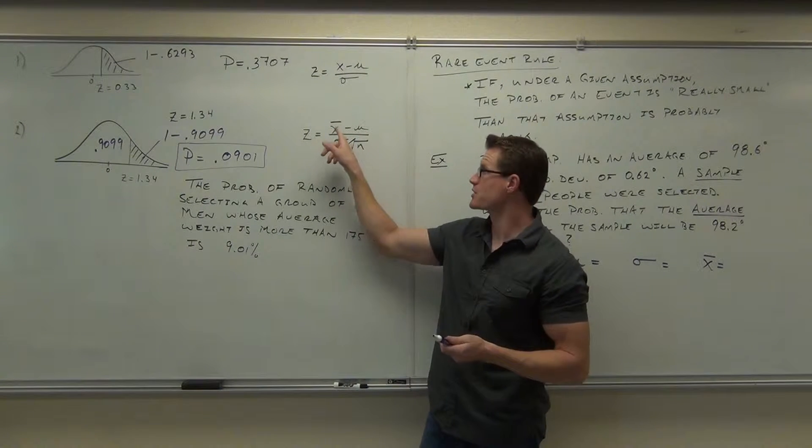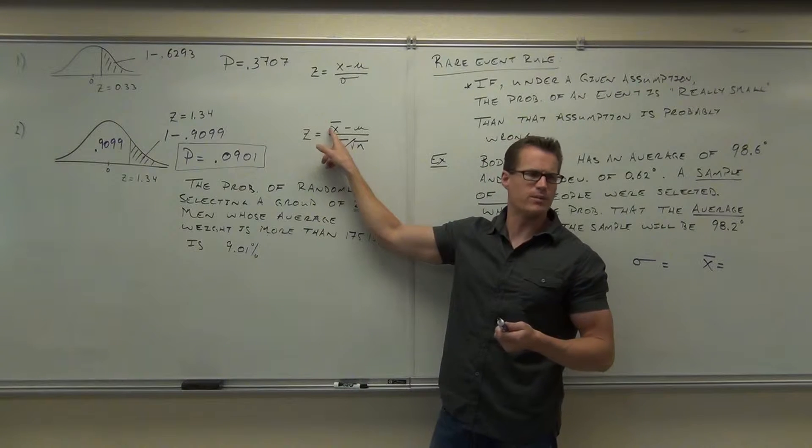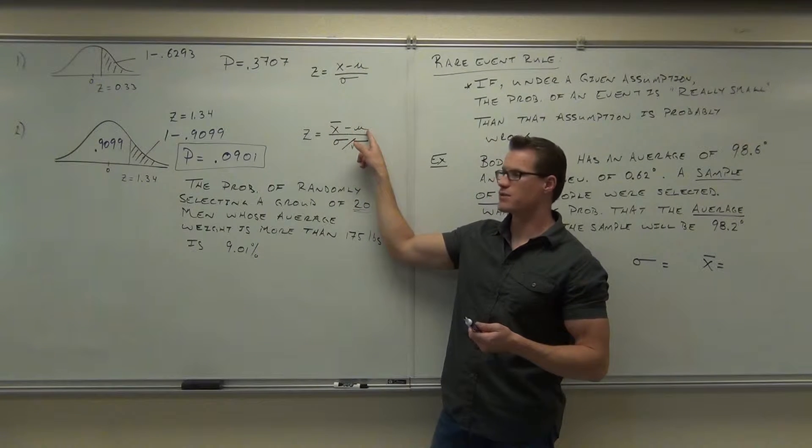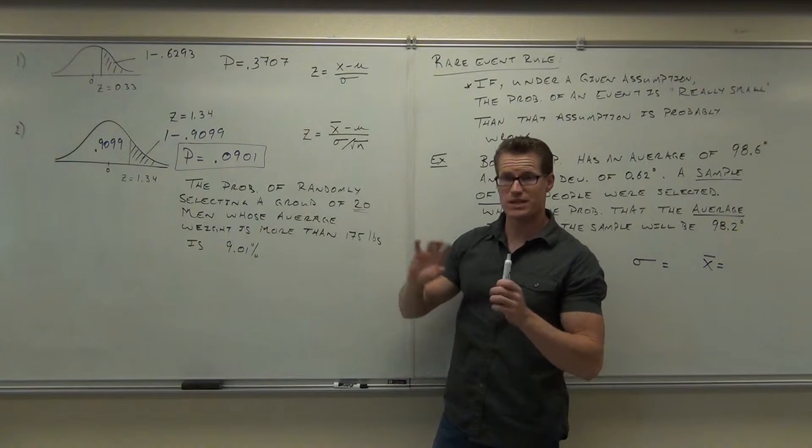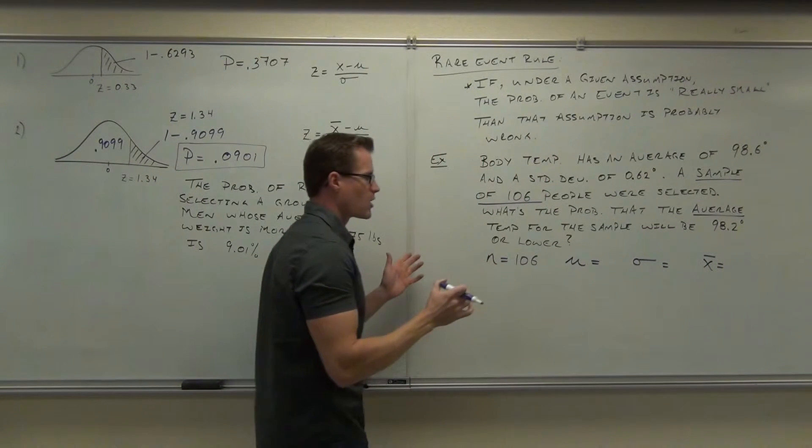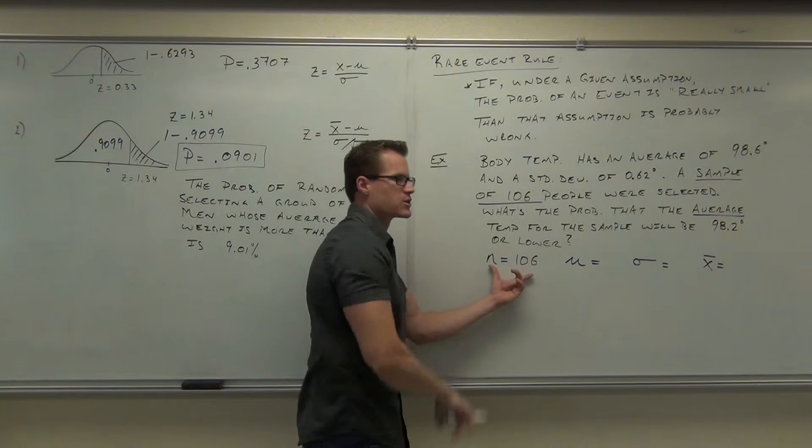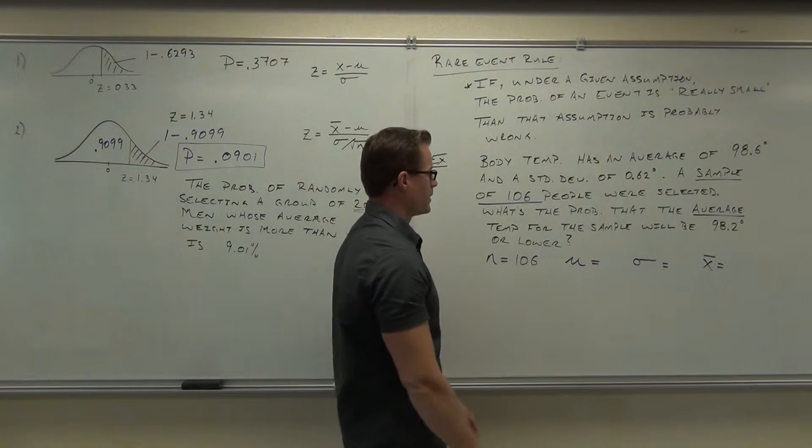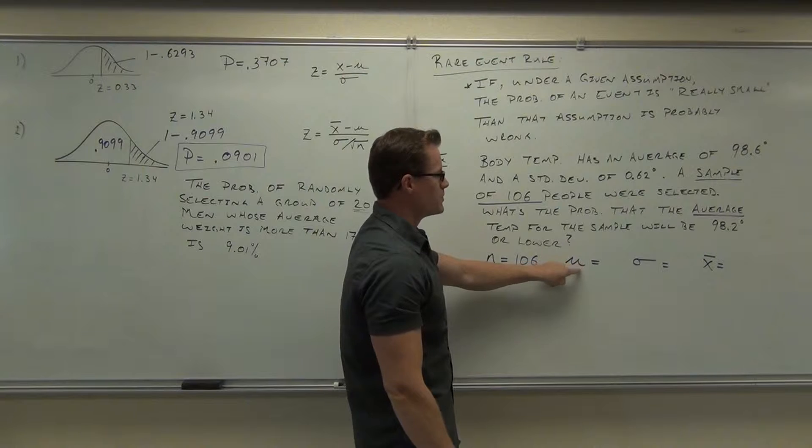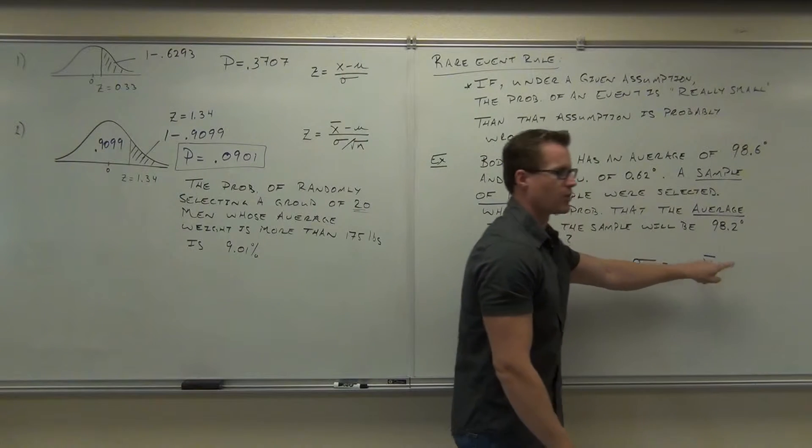That's the average of the, wait a minute, population or sample? Sample. This is the average of the? Population. Okay, so you need to distinguish between those two things. So when we read our problem, yeah, N's pretty easy. N's the sample size. So here we have 106 people being found. What is the mu and what is the x-bar?